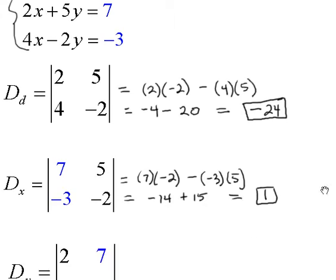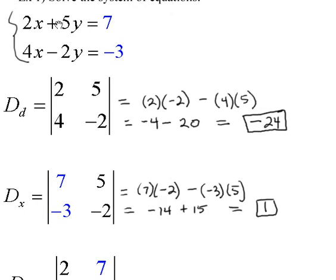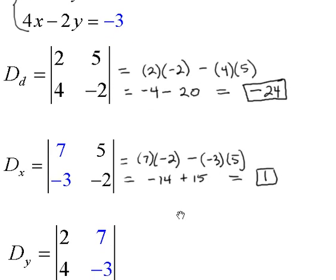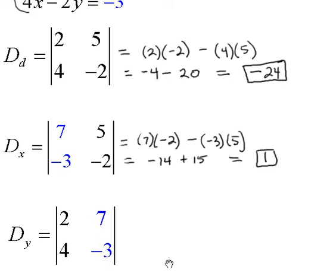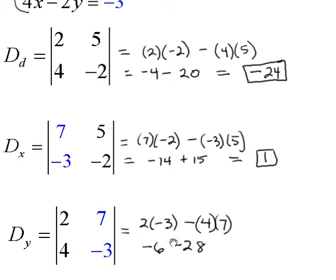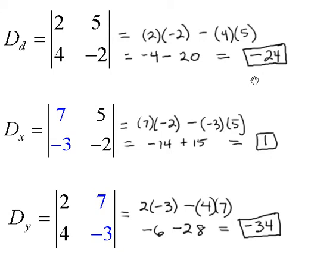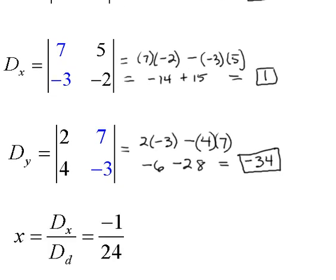To find the numerator of y, we replace the y coefficients (5 and negative 2) with the constants 7 and negative 3. The determinant is 2 times negative 3, minus 4 times 7, which gives negative 6 minus 28, equaling negative 34. So we have all the components: the denominator is negative 24, the numerator of x is 1, and the numerator of y is negative 34. Now we put them together to get our solution for x and y.